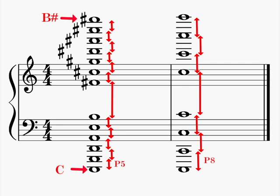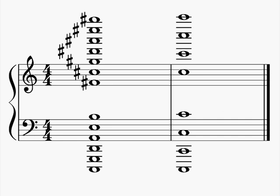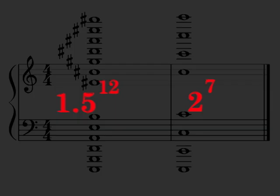This illustrates that we assume that 12 fifths should be the same as 7 octaves. To transpose the bottom pitch to the top one using justly tuned fifths, we multiply it by 1.5, 12 times. Another way to express that is 1.5 to the power of 12. To transpose the bottom pitch to the top one using octaves, we multiply by 2, 7 times. This can be expressed as 2 to the power of 7.